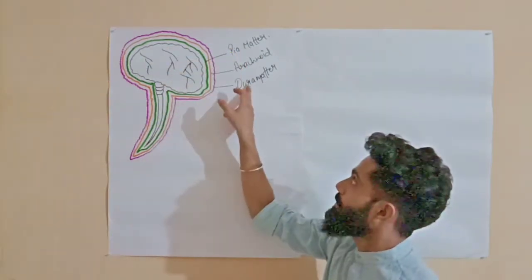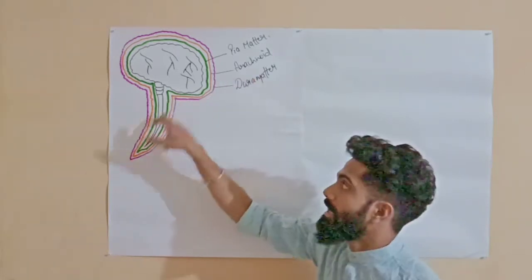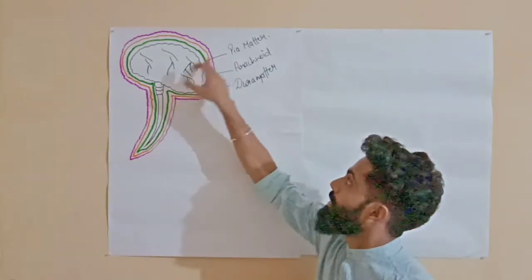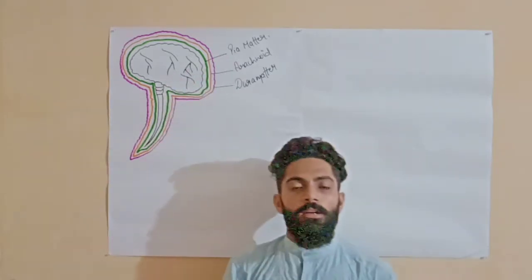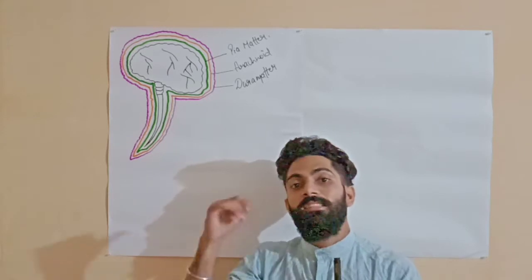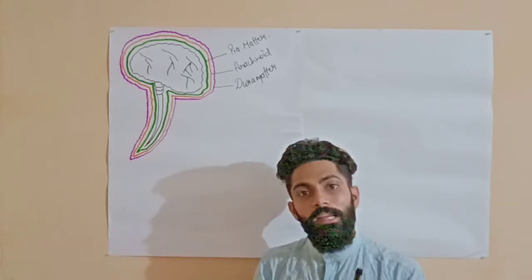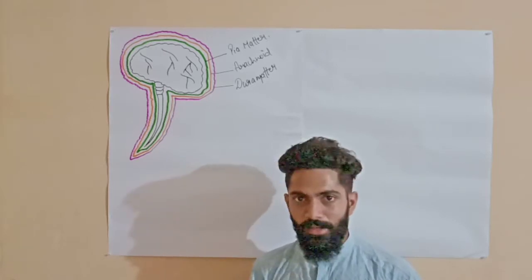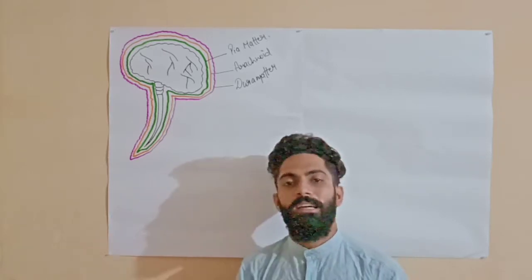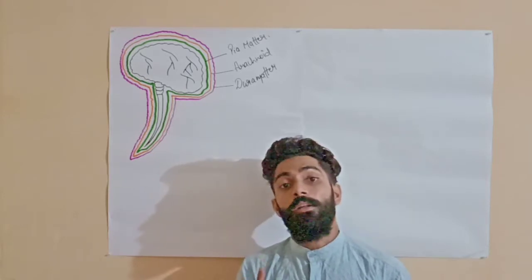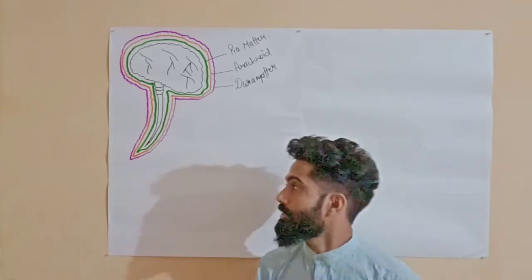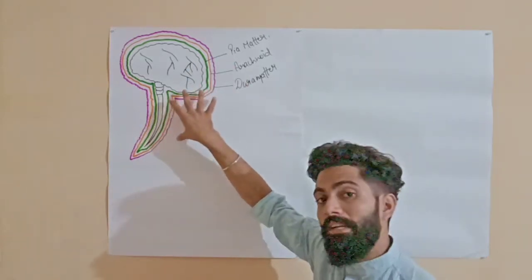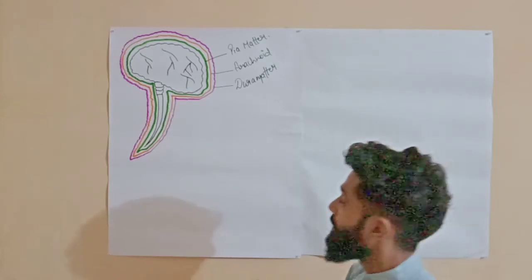The dura mater is the outermost layer of the brain and the spinal cord, the arachnoid mater is the middle layer, and the pia mater is the innermost layer. In meningitis, these layers get inflamed by any bacterial infection, any viral infection, or any fungal infection.